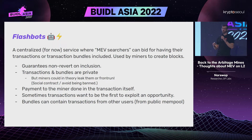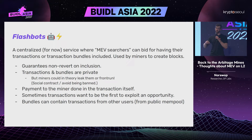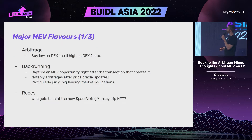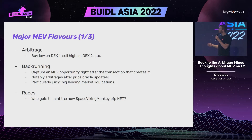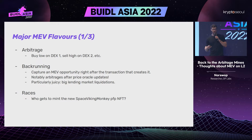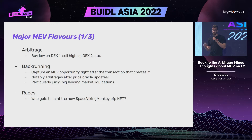The goal is to be the first one to exploit an opportunity. Bundles can contain transactions from the searcher but also from other people they got from the public mempool. Examples of MEV include arbitrage — simply buy something at a low price, sell it at a high price — and back-running, which is capturing an opportunity right after the transaction that creates it, such as arbitrage after oracle price updates or liquidations on lending markets.